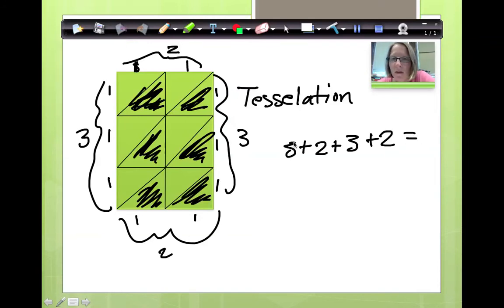Well, this is five. This is five. Five plus five is ten. So, what's my perimeter? Ten. Ten units, because I didn't give you a measurement. Okay.